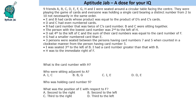Hello everyone, welcome to Aptitude Jab. This is a set based on seating arrangement. There are nine friends seated around a circular table playing a game of cards, and each one was holding a single card having a number from 2 to 10, not necessarily in the same order. So there are two things: the circular arrangement plus the cards that each person holds. There are nine people around the circle and we need to find the card each was holding.